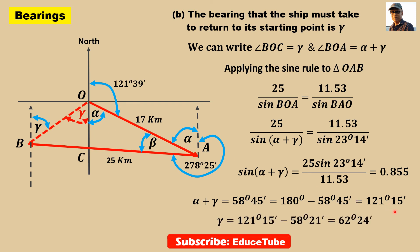From this, if we subtract alpha, we get 62 degrees 24 minutes. So we can say the required bearing for this line to go back to the starting position is 62 degrees 24 minutes.